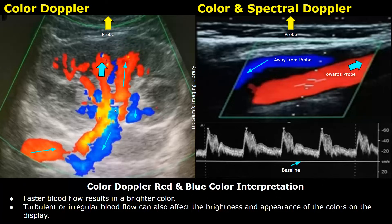Similarly for blue, this area is brighter because it has a higher blood flow velocity compared to surrounding areas. Turbulence or irregular blood flow gives a mixing of red and blue colors with different brightness levels, because blood is flowing in various directions rather than one single direction.